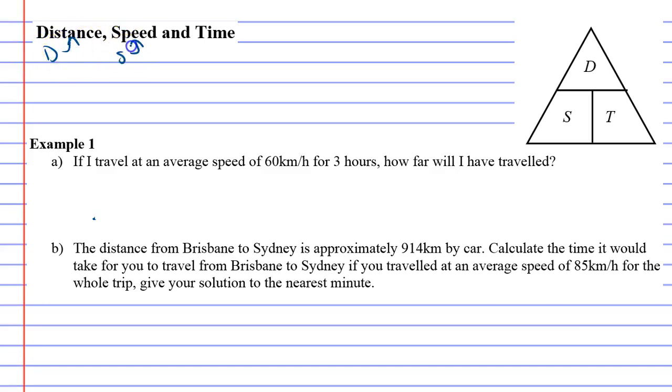S is speed and T stands for time. Now sometimes you want to find the distance traveled, sometimes you want to find the speed, and sometimes in a question they're going to ask you to find the time, and each one has a different formula. But this triangle helps in figuring out what the formula is.